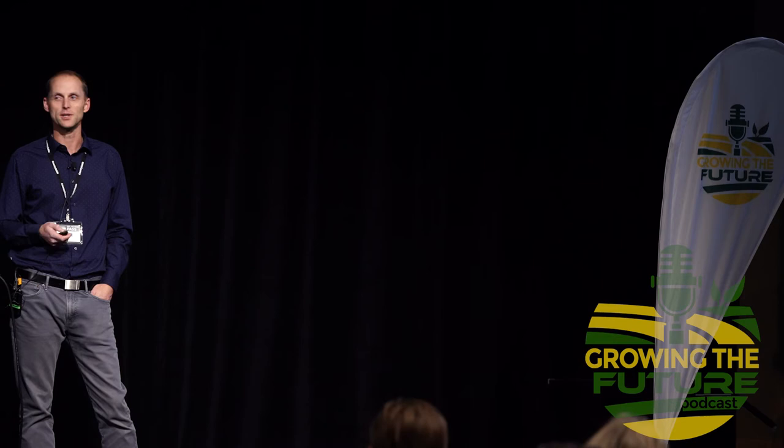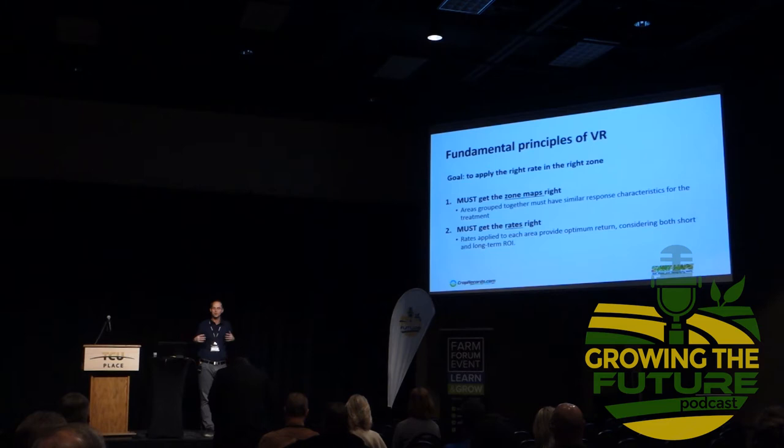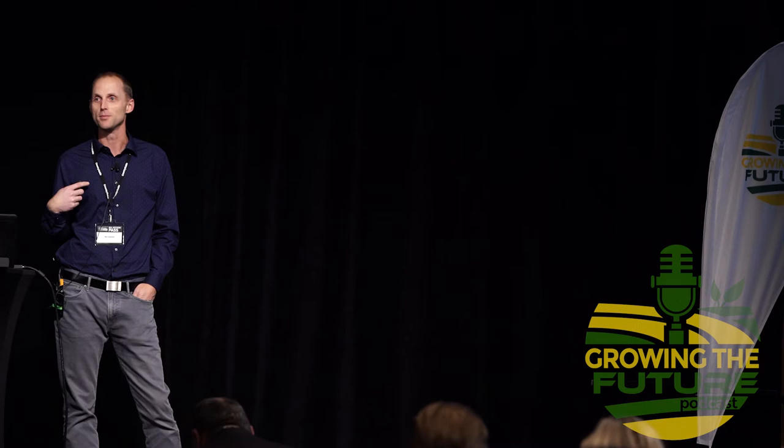We can have a perfect map — we often will map a field, get the SWAT map produced, get a ground truth, then go to a farm client and show them the SWAT map, and they'll say, 'That is the field.' But we still have to soil test it to really understand what the potential is to manage it, and we still have to get the agronomy right. I'm the first to admit we've got perfect maps sometimes and I might make a poor recommendation. We still might not mitigate lodging or correct a deficiency like copper — and that's an actual example that happened to me this past season.